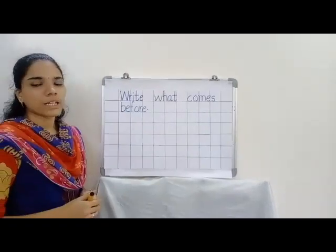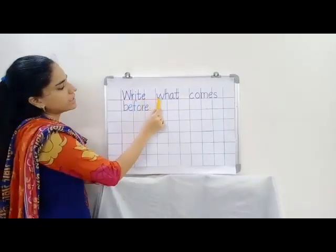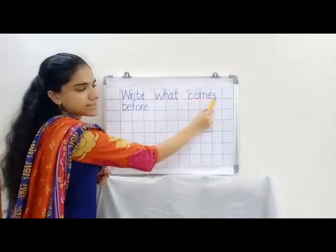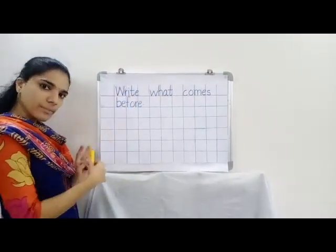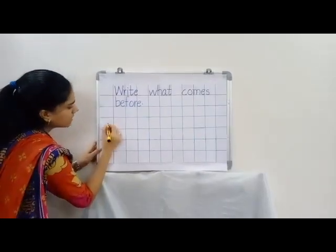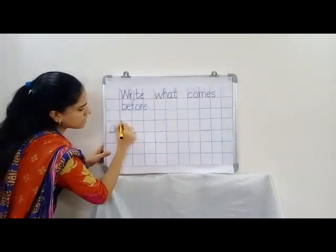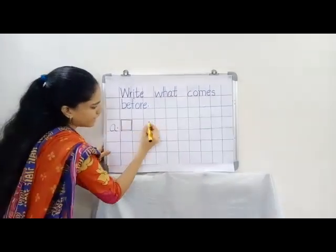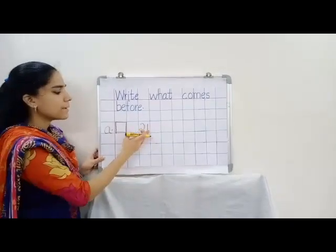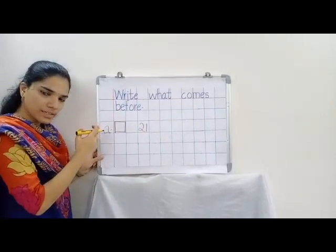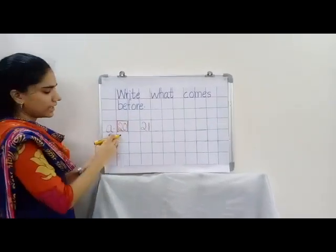Now children we will see how to write before numbers. Write what comes before. That means you have to write before numbers. Now leave one line and write small a dot. Now here you have to draw a box, leave one box and write 21. Now children tell me which number comes before 21. Before 21. Yes, it is 20. 20 comes before 21.